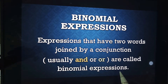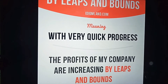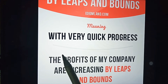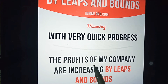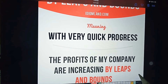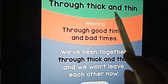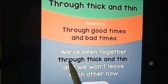For example, you have heard expressions such as 'sick and tired' or 'up and down.' Let's see a few common binomial expressions. 'Leaps and bounds' — or 'by leaps and bounds' — means with very quick progress. For example: 'The profits of my company are increasing by leaps and bounds.' Another one: 'through thick and thin,' which means through good times and bad times.